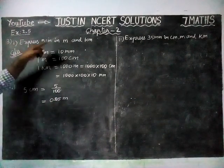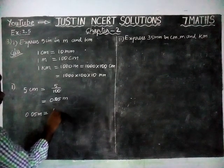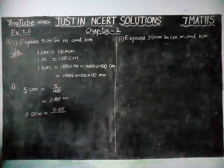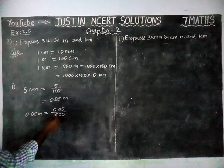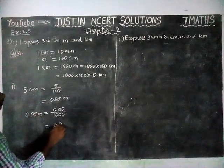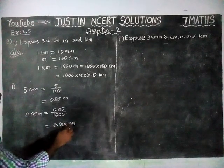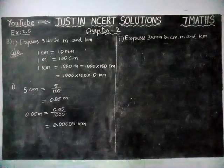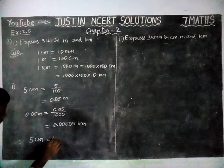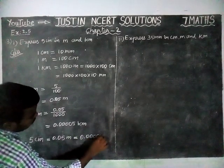Now we are going to convert the same answer into kilometer. 0.05 meter is equal to 0.05 divided by 1000, because 1 kilometer is equal to 1000 meter. Here we have three zeros, so we have to move the digits three steps to the left-hand side. So the answer is 0.00005 kilometer. Therefore, 5 centimeter is equal to 0.05 meter, which is equal to 0.00005 kilometer.